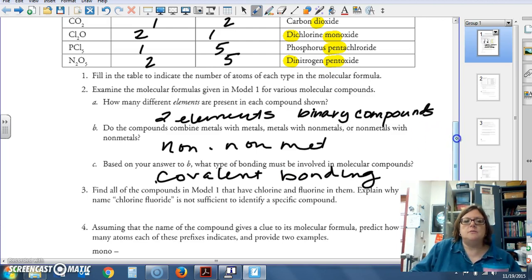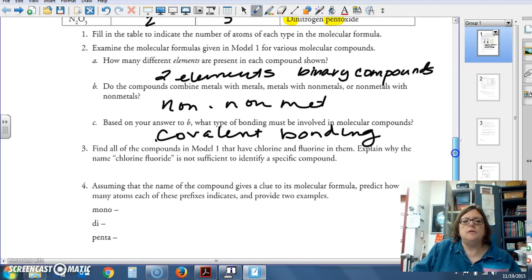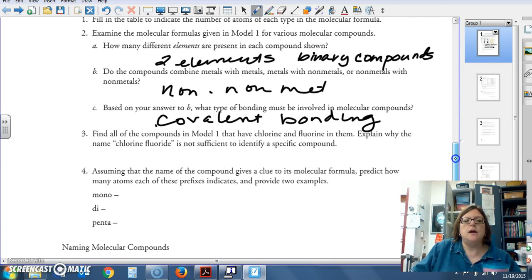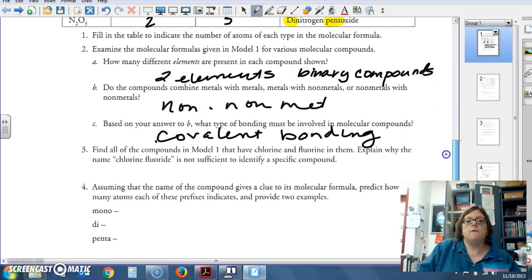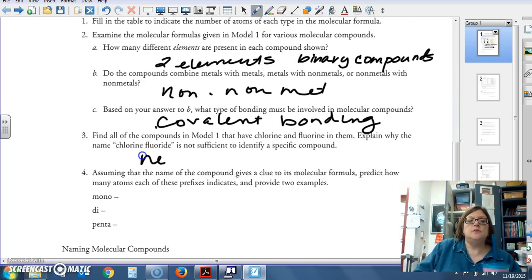Find all the compounds in model one that have chlorine and fluorine in them. Why is the name chlorine fluoride not sufficient? Why can't we call this chlorine fluoride? Because this compound, chlorine pentafluoride, is very different from chlorine monofluoride. So, we need to differentiate numbers of atoms.